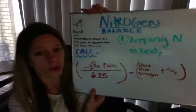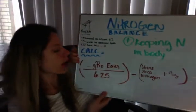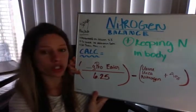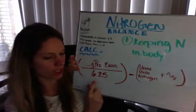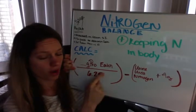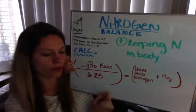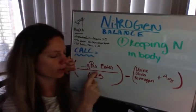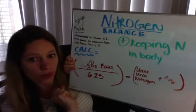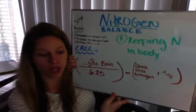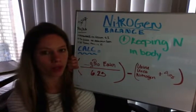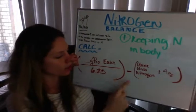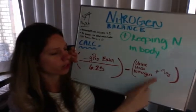To break down our formula: we're going to look at the grams of protein eaten — our protein intake — and divide that by 6.25. Where the 6.25 comes from is this: for every 6.25 grams of protein eaten, one gram of nitrogen is excreted. So if we ate 6.25 grams of protein, we would have one gram of nitrogen leave our body. Then when we find that number, we subtract it from the urine urea nitrogen plus 4 grams.